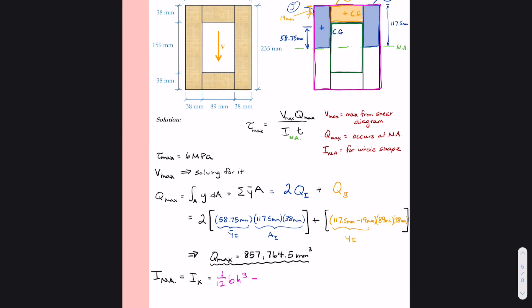So that's going to be 1/12 bh cubed for the magenta rectangle minus 1/12 bh cubed for the green rectangle.